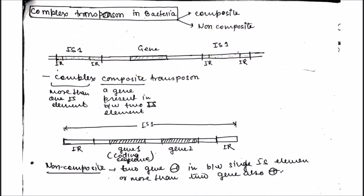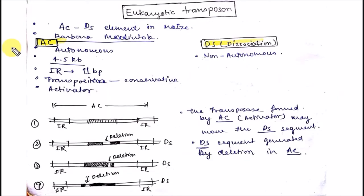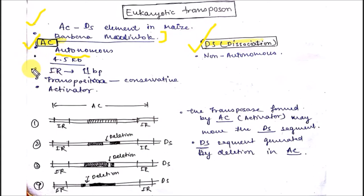Now let's discuss eukaryotic transposition. An example is the AC/DS system, present in maize or corn. These transposable elements are made up of two components: AC, which is autonomous, and DS. AC has a size of 4.5 KB and the inverted repeats in AC are 11 base pairs. The mechanism of action of AC/DS is conservative — it acts by the cut and paste mechanism.